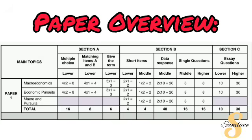The last question type in Section B is the eight-mark questions. These are a single question that stands on its own and is worth eight marks. You're going to have two — one in the middle class and one in the higher class — for both macroeconomics and economic pursuits, and one mixed question covering both. Remember, in Section B you get to choose — you don't have to answer all three of the main topics; you can just choose two.